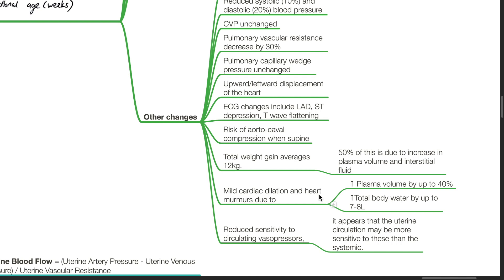Mild cardiac dilation and heart murmurs due to increased plasma volume and total body water. Reduced sensitivity to circulating vasopressors appears, though uterine circulation may be more sensitive to this than the systemic circulation.